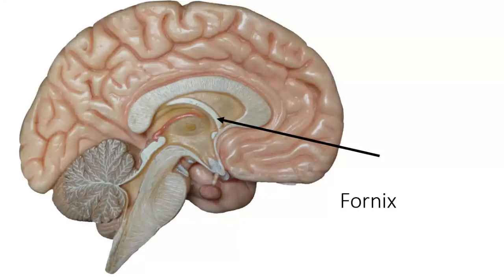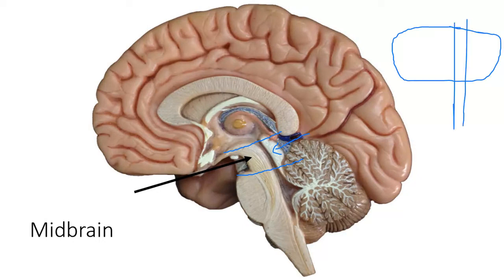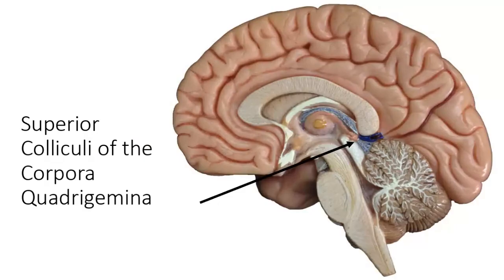There's only one more region of the brain we haven't talked about — that's the brainstem. The brainstem is where your brain starts to taper down and eventually transitions to the spinal cord. There are three parts to your brainstem. The top part is the midbrain — think of it as one block with a tube running through the middle, so you see a front and back portion of the midbrain.